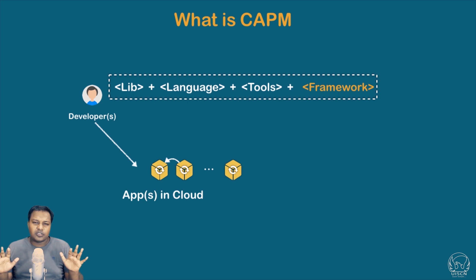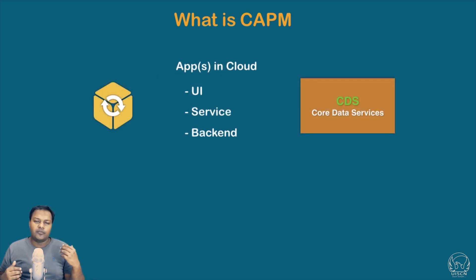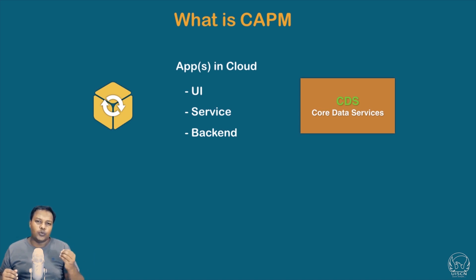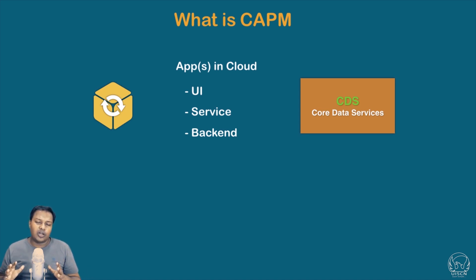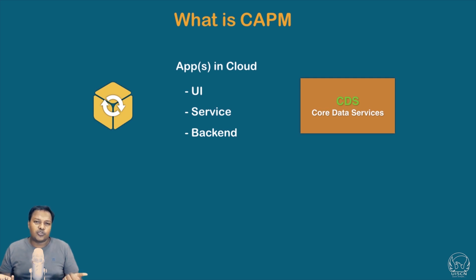When we think in terms of an application, we have the UI and the service with the backend. In CAPM, CDS — Core Data Services — are predominantly used. CDS is a way of creating entities. We have already seen a lot of entities in our CDS course where we created many structures and views. With the help of CDS, we can define entities, which are basically structures stored in the database — or simply, tables.